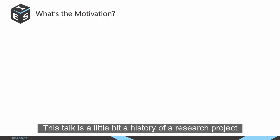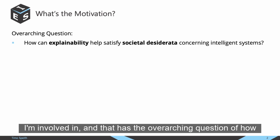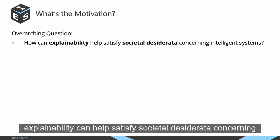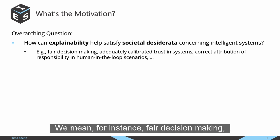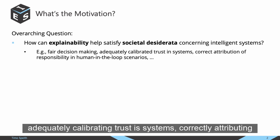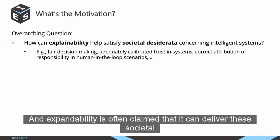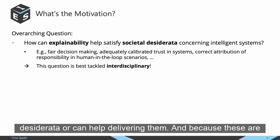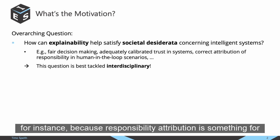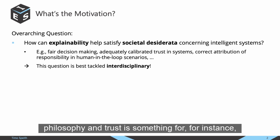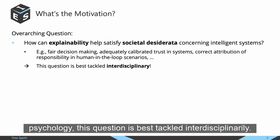This talk is a history of a research project I'm involved in, with the overarching question of how explainability can help satisfy societal desiderata concerning intelligent systems — for instance, fair decision making, adequately calibrating trust in a system, correctly attributing responsibility, and human-in-the-loop scenarios. Explainability is often claimed to deliver these societal desiderata. Because these are questions best solved across disciplines — responsibility attribution belonging to philosophy, and trust to psychology — this question is best tackled interdisciplinarily.